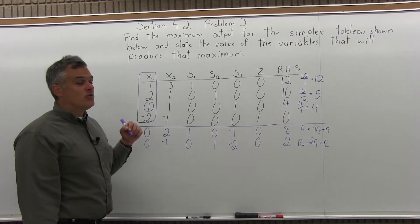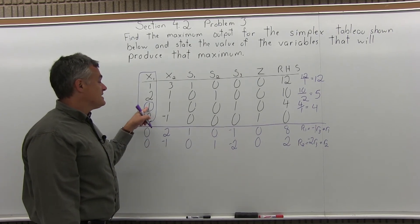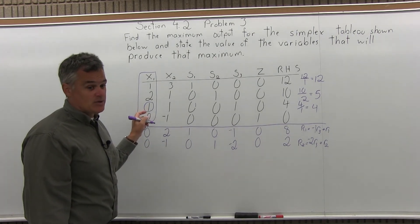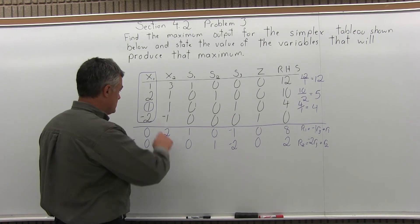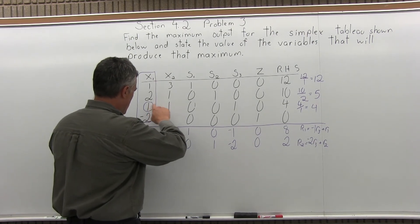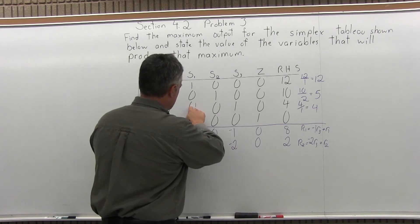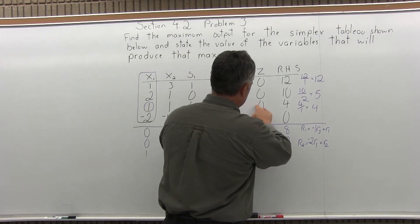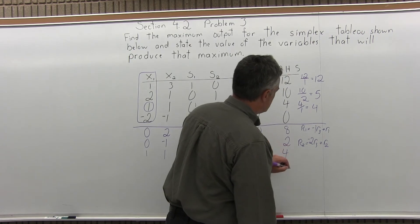Row 3 contains the pivot element, so I don't want to change it. I'm going to copy Row 3 exactly as it is: 1, 1, 0, 0, 1, 0, 4. It stays unchanged.